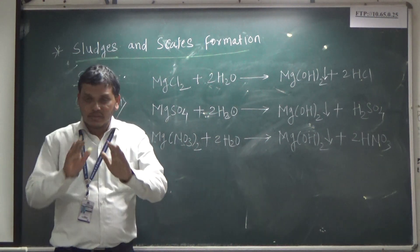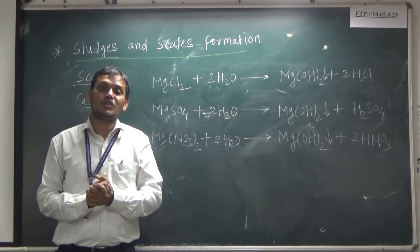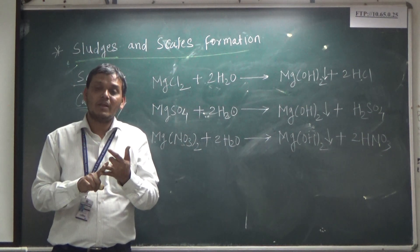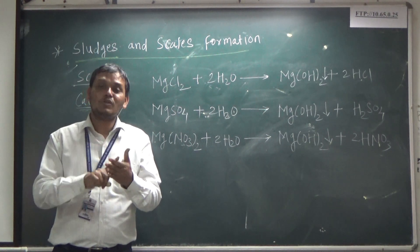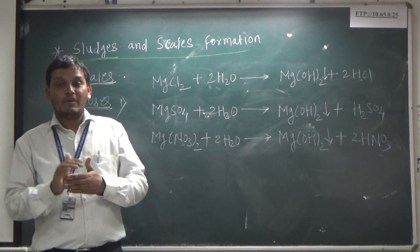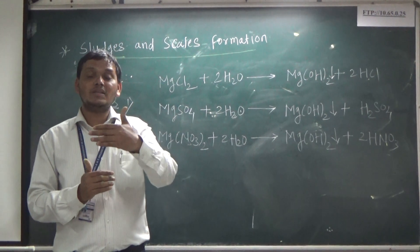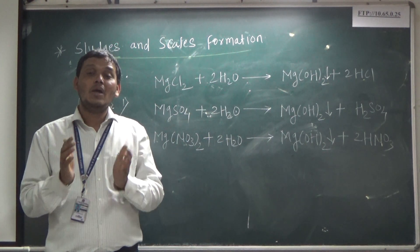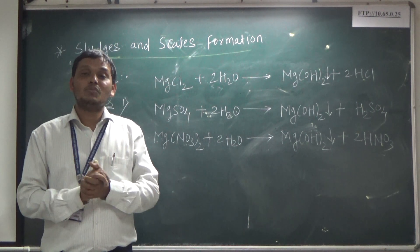The disadvantages of scale and sludge formation include: wastage of fuel, risk to boiler safety, decrease in efficiency, and explosion hazards. In this video session you have learned what is scale and sludge, what are the causes of scale and sludge, what are the disadvantages, and what are the preventive methods of scale and sludge formation.